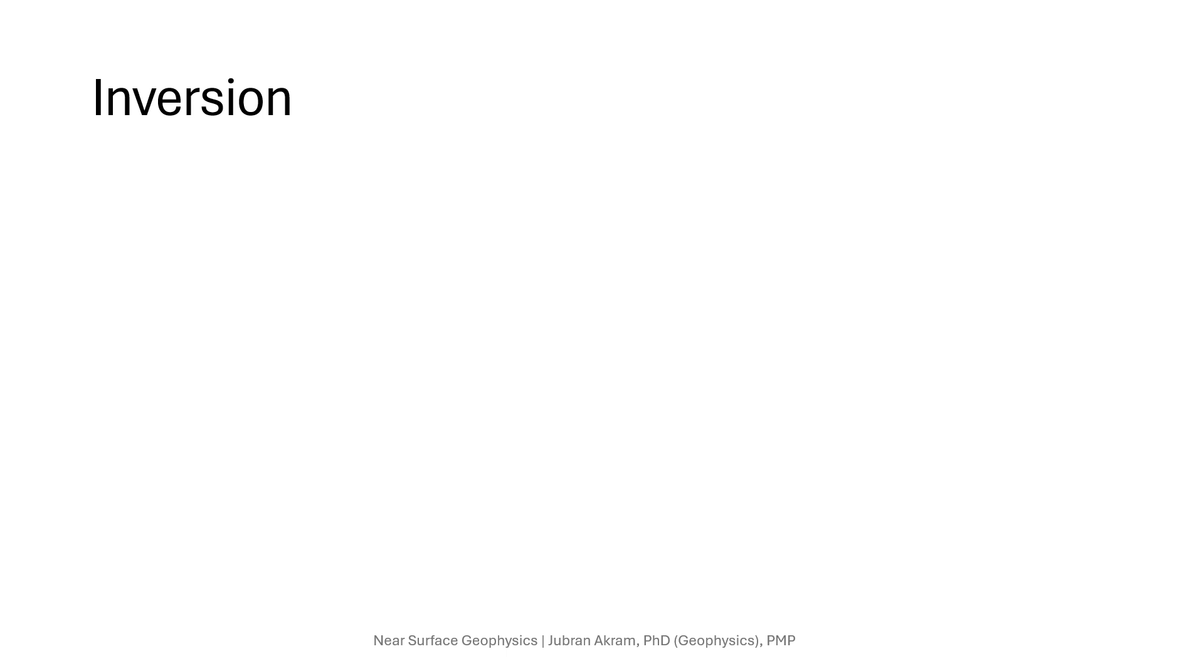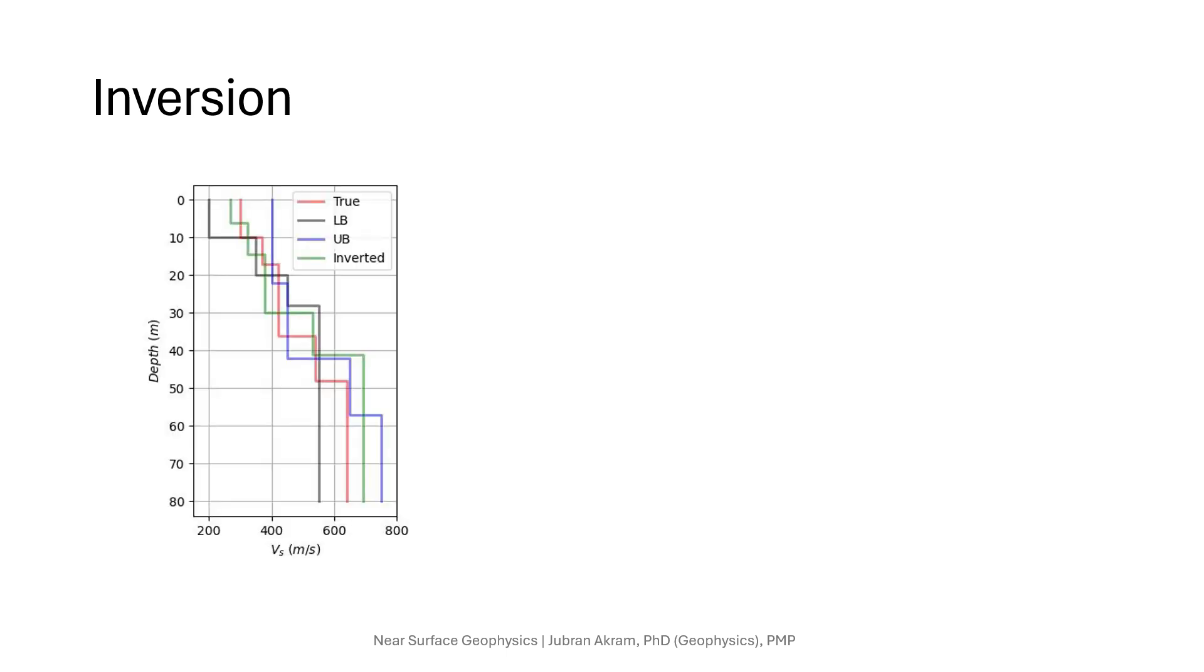The inversion process is iterative. So we start with an initial VS model along with thickness, density, and velocity values. In our case we are using a particle swarm optimization algorithm. So here we are providing the lower bound and upper bound for the model values. We use the stiffness matrix method to generate the theoretical dispersion curve and compare with the one we picked.